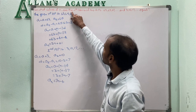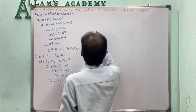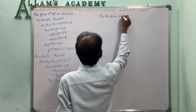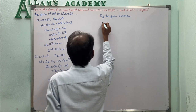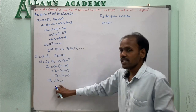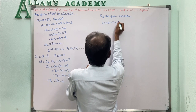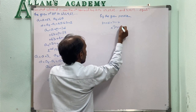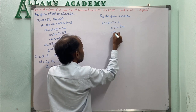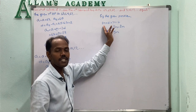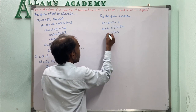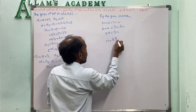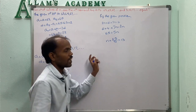By the given problem, both Nth terms are equal: 2N + 61 equals 7N - 4. Transferring 2N to the right side: 7N - 2N equals 5N. Transferring -4 to the left: 61 + 4 equals 65. So 5N equals 65, giving N equals 65 divided by 5, which is 13.